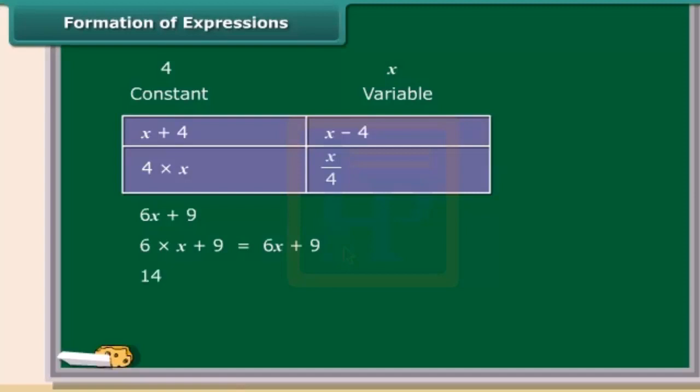Similarly, 14y minus 30 is obtained by first multiplying y by 14 and then subtracting 30 from the product. So, children, you see these expressions were obtained by combining variables with constants. You can also obtain expressions by combining variables with themselves or with other variables.